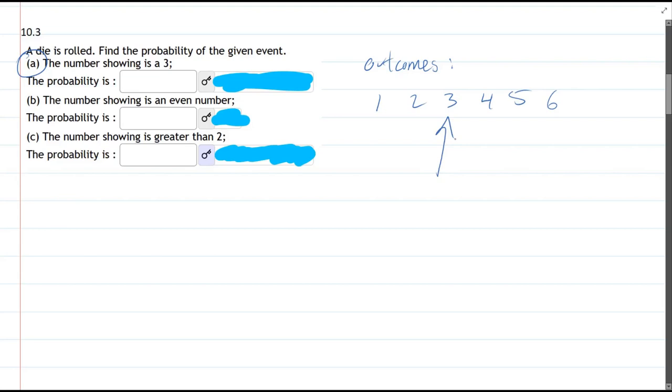There's only one chance to get a three. So to get a three, we have one chance out of six possibilities total. So it's one-sixth.